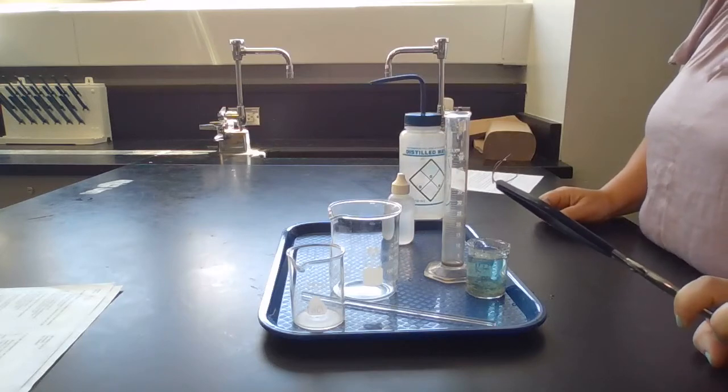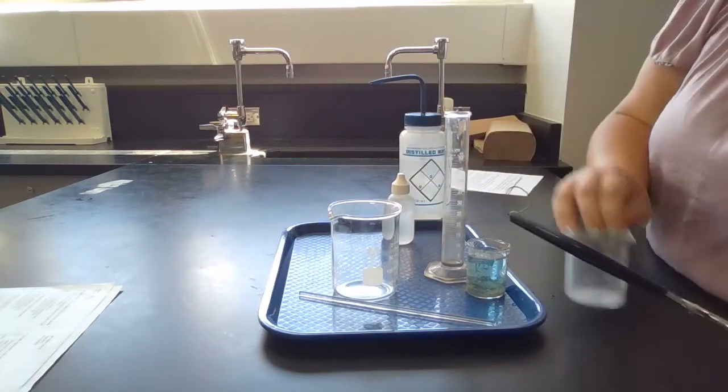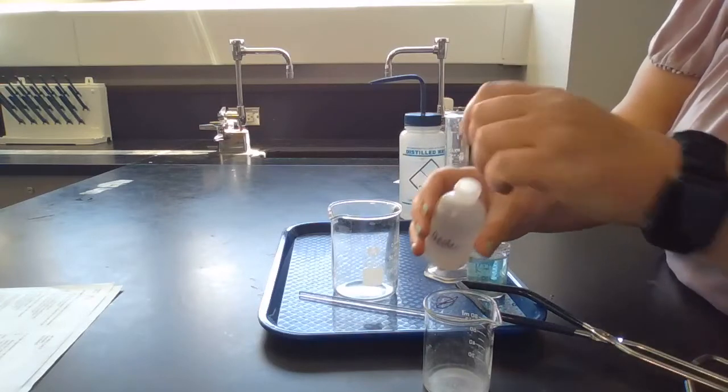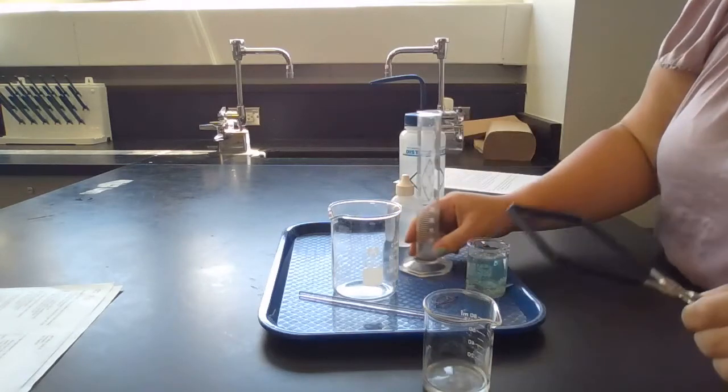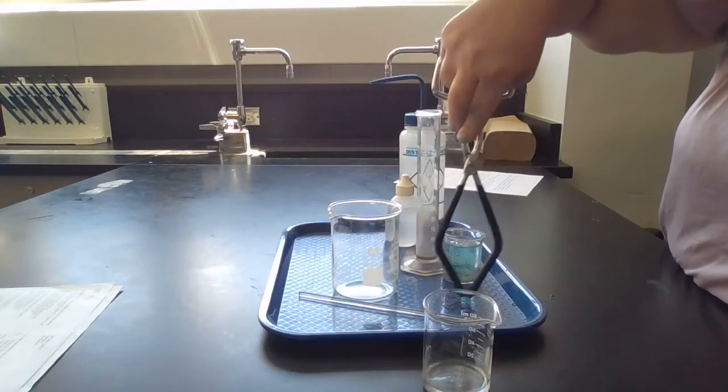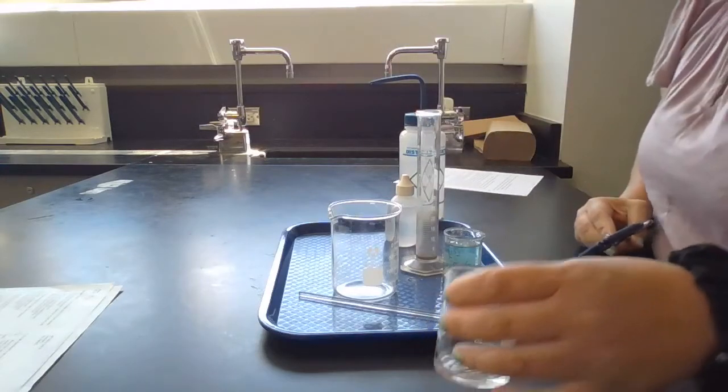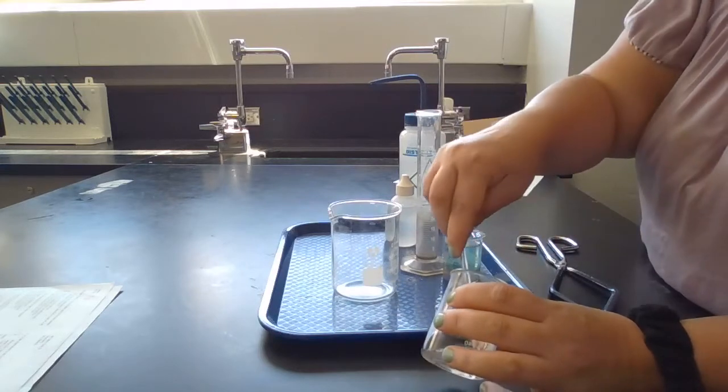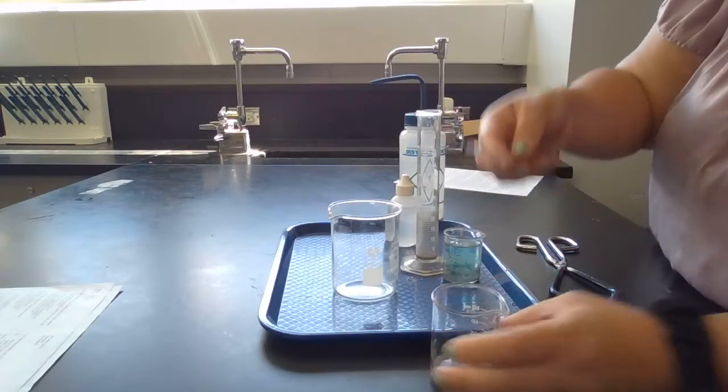So dip the leftover copper wire in acetone to help it dry. So what I'm going to do is take another beaker, doesn't matter what size, and my acetone. I'm going to put a little bit, it doesn't matter how much, of the acetone in the beaker. And then leave the wire in there just for a couple seconds.